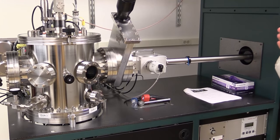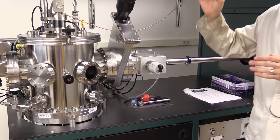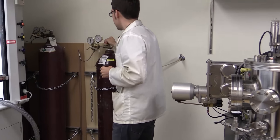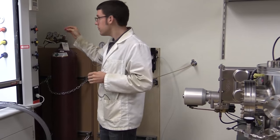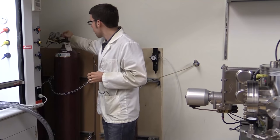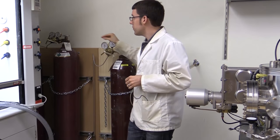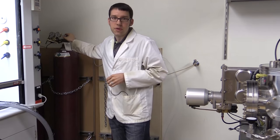So back to our sputtering process. I need to open some valves on these tanks. I'm going to open an argon valve as well as our nitrogen valve. Argon is for our process. Nitrogen is for venting when we're finished.